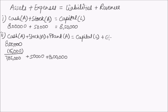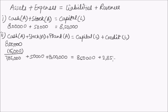On the right-hand side, along with capital, a new account called credit — also a liability — comes in. The creditor amount is 2 lakhs 85,000, bringing the total to 11,35,000 on both sides. The equation remains intact, confirming our second transaction adjustments are correct.